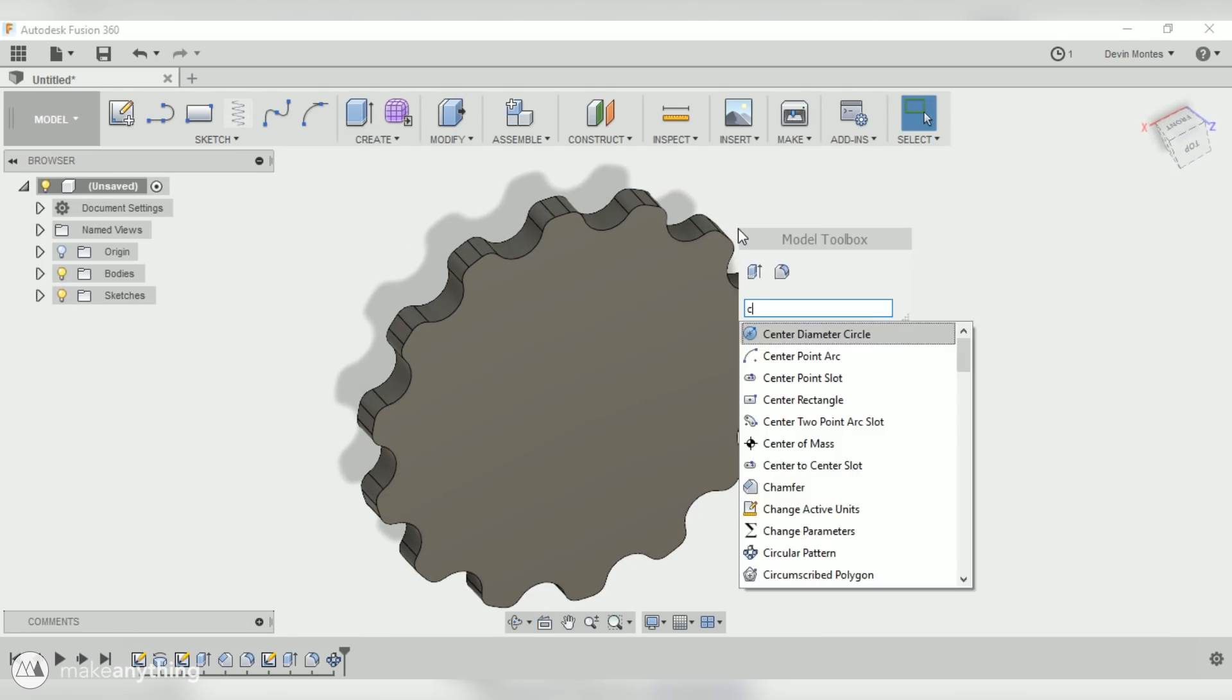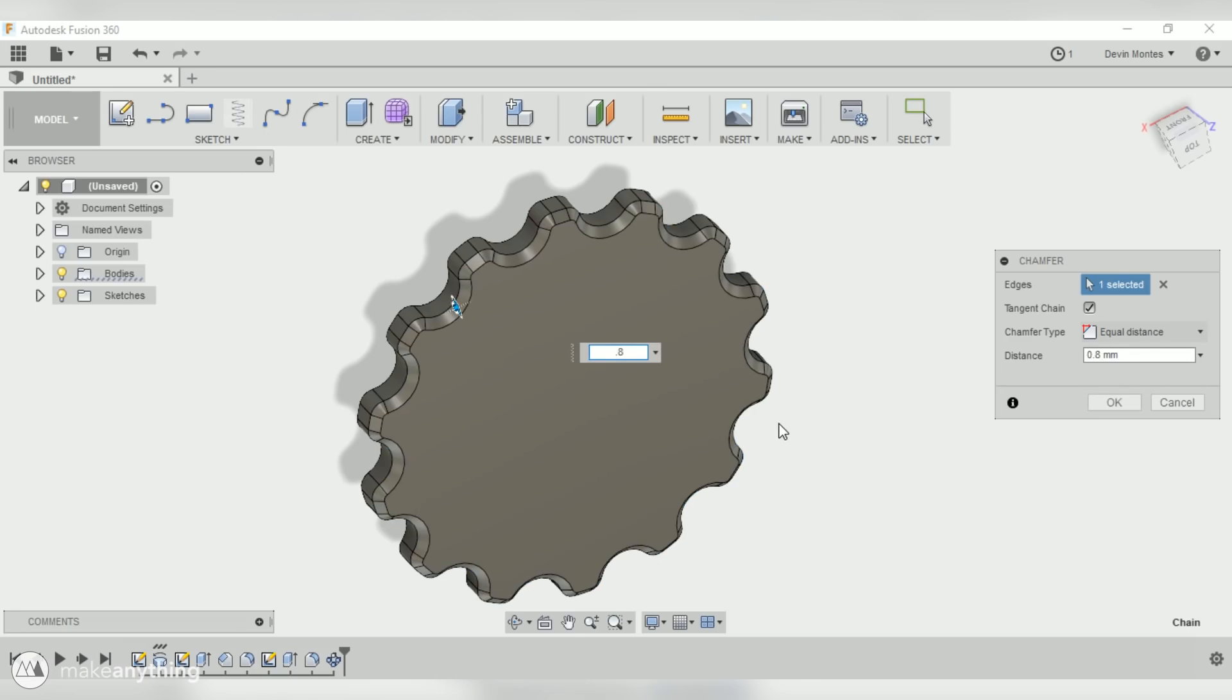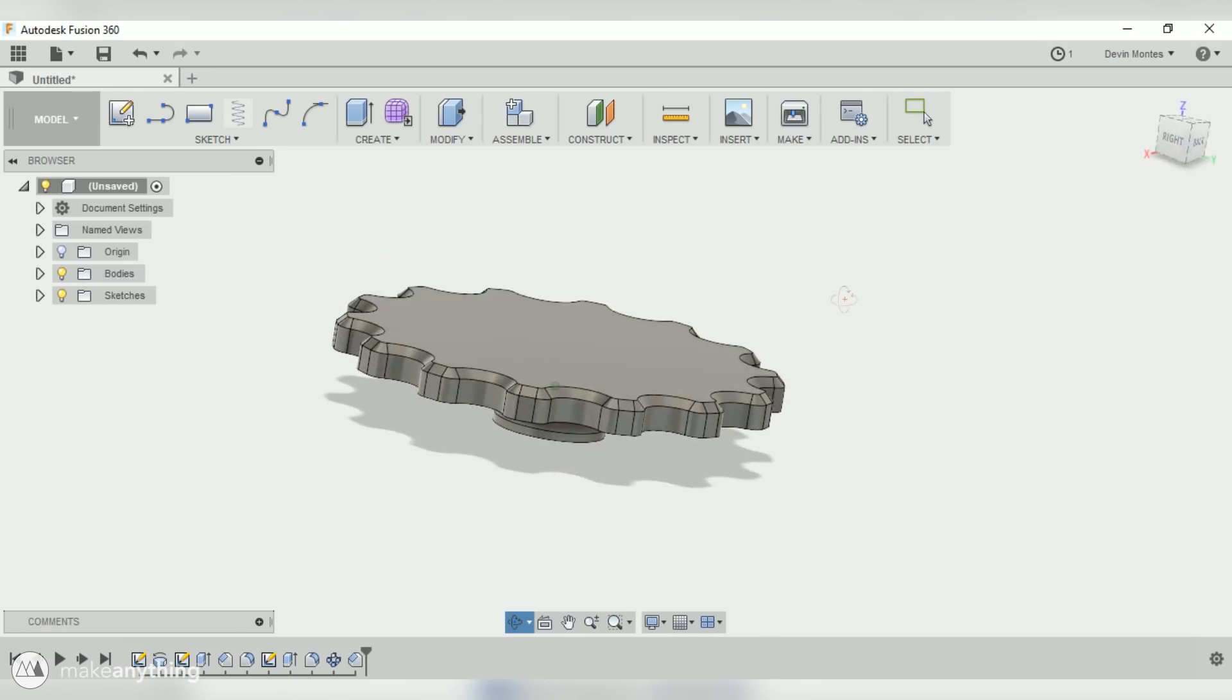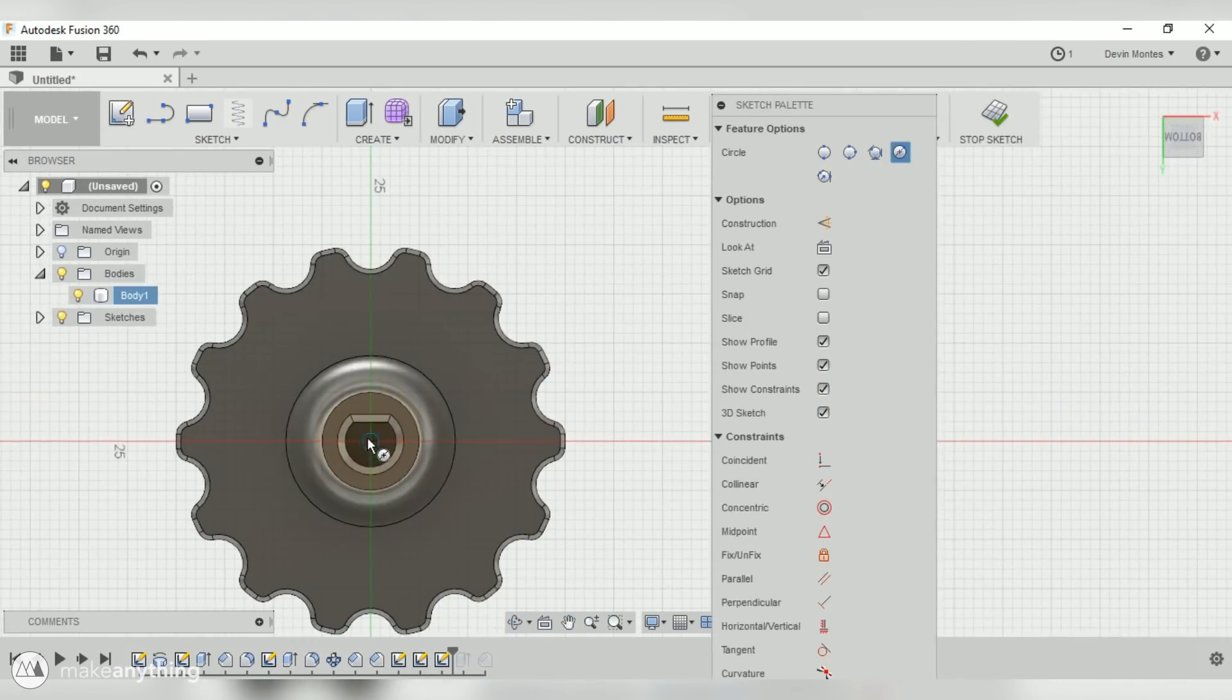So now we'll just go ahead and add some more chamfers, just so that things come off the build plate better and again to not have too many sharp corners. Finally, I'm going to cut some holes into this handle. For one thing it'll save some material, but also I want to be able to look through the handle and see what's happening in the extruder when this thing is connected to the printer, so it'll increase the functionality a bit as well.